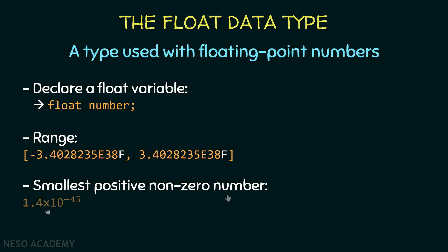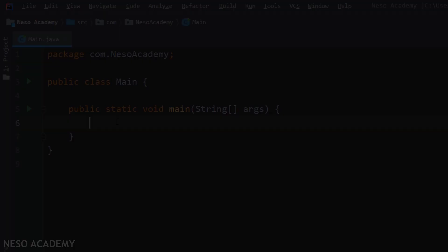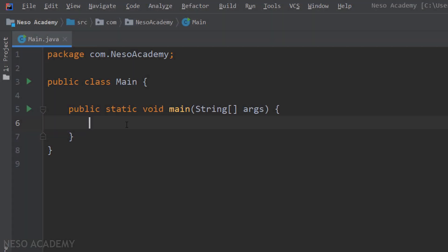The smallest positive non-zero number that can be stored in a float is 1.4 multiplied by 10 to the power negative 45. This number is larger than the smallest value a double can store, so a double is more precise than a float. If you are developing an application that needs very precise floating point numbers, you will use a double instead of a float. Finally, a float takes 4 bytes in memory.